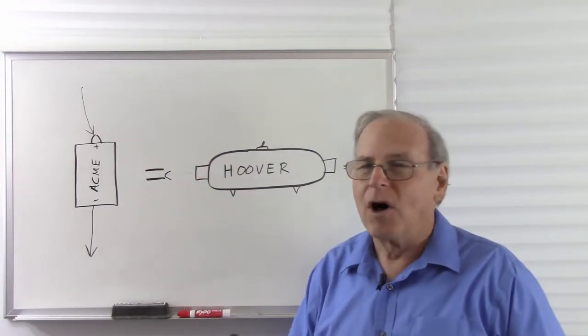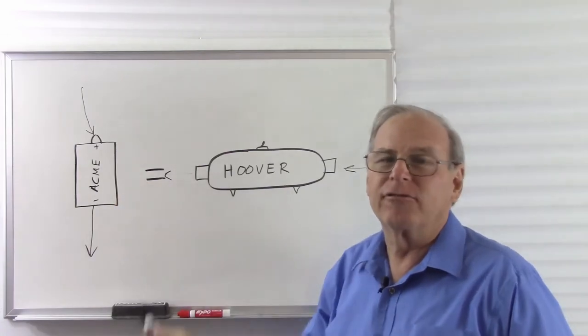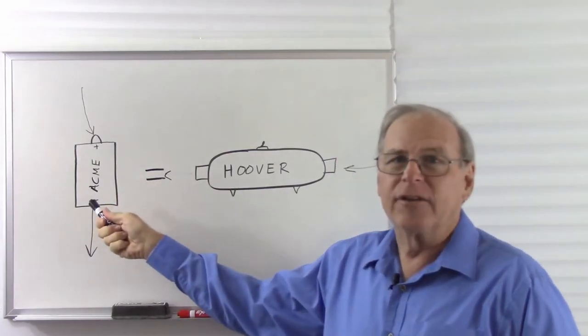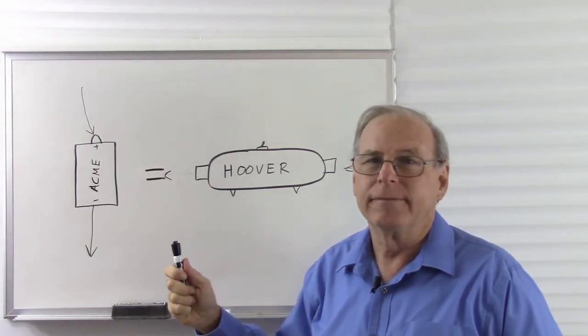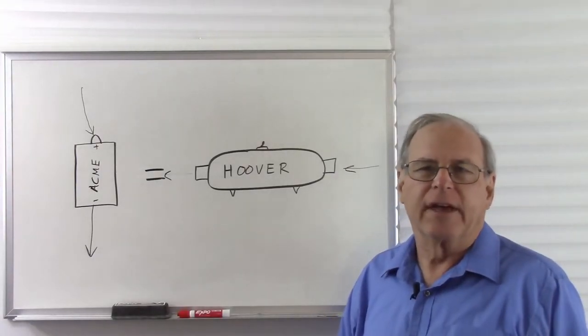But then Thompson came along and proved that the electrons are actually flowing the opposite direction. So the negative side is actually the higher pressure and the positive side is the lower pressure. That caused confusion and controversy that continues to this day.